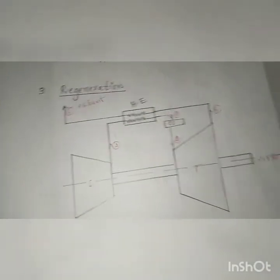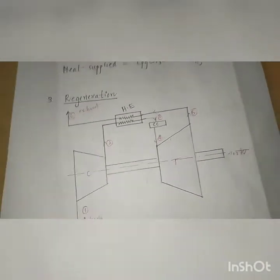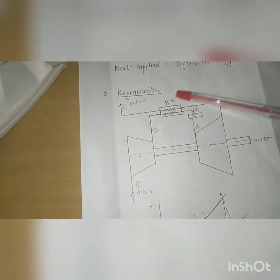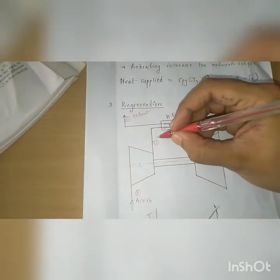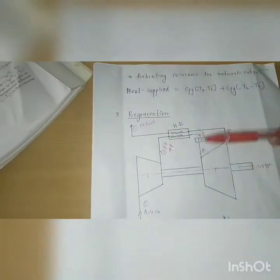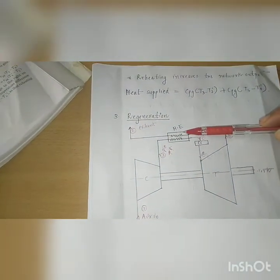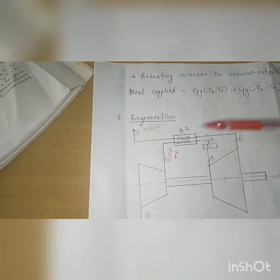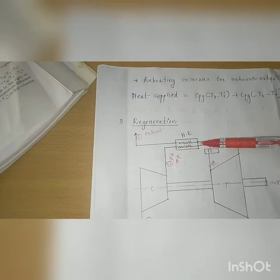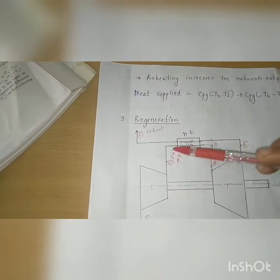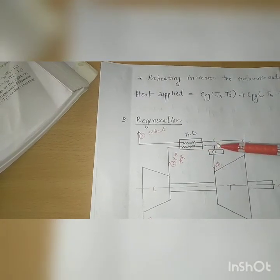The next method is regeneration. In regeneration, the compressor outlet air — which is at high pressure — is passed through a heat exchanger. This heat exchanger absorbs heat from the exhaust gas, raising the temperature of the compressed air before it enters the combustion chamber.